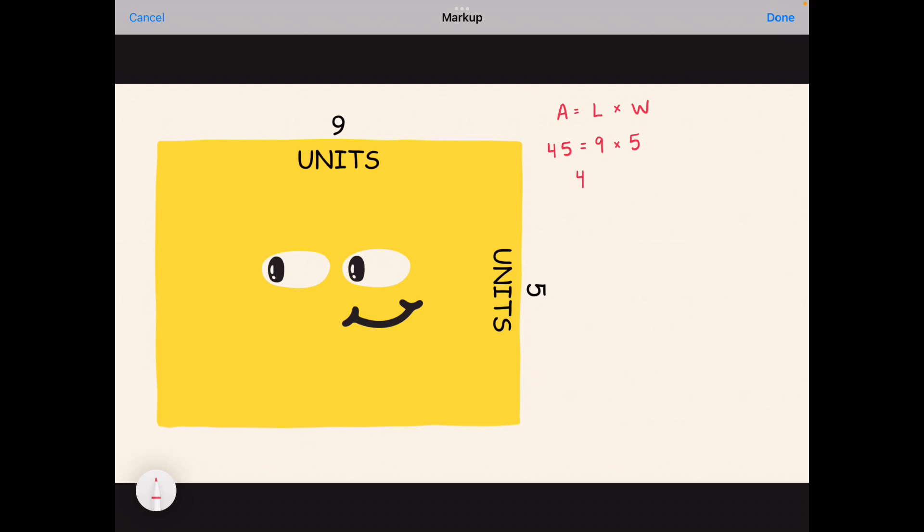Now what's special about area is that units are squared. So to show that, since I'm just talking about units here instead of something specific, like meters or centimeters or kilometers, I'm just going to write units, and then I'm going to square that by putting the exponent 2 to the right of units. I only do this when I'm solving for area.